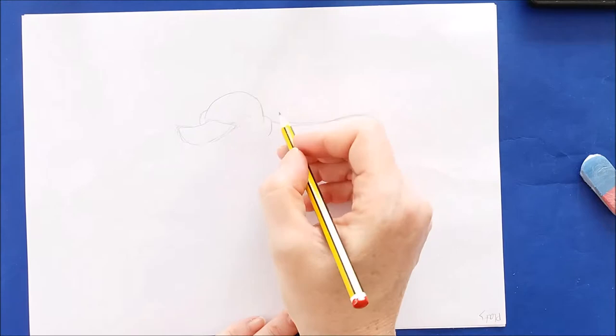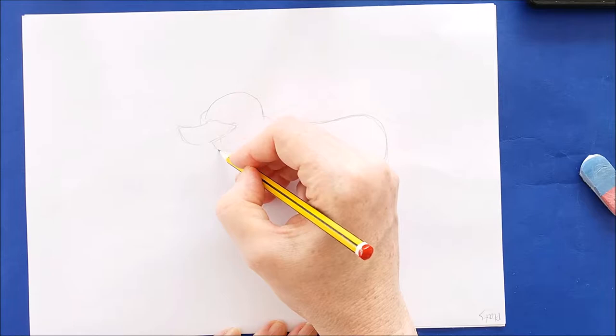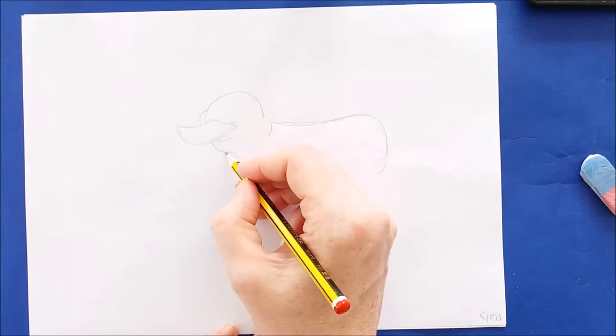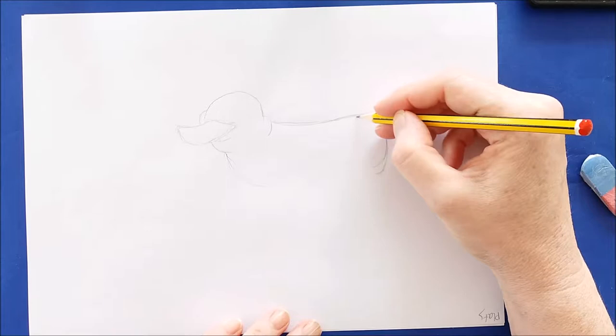And I'm just going to add a chin here, and then we'll draw his chest, which comes down in a curving line. You can see this hot dog shape taking form.